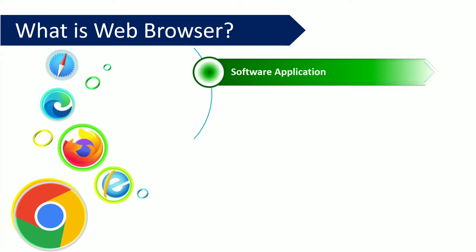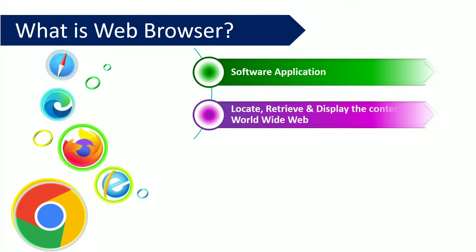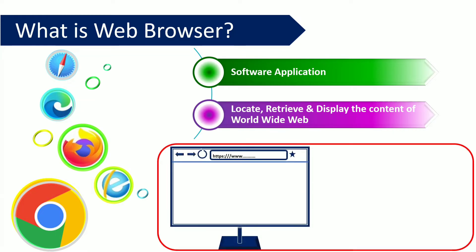Basically, any browser is a software application which can be installed on a computer or mobile, and it is used to locate, retrieve, and display the content of the World Wide Web. When we enter a URL in the address bar of the browser, our computer will connect with DNS, which is the phone book of the internet, used to translate domain names into IP addresses. Web browsers usually interact with servers only through IP addresses.